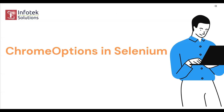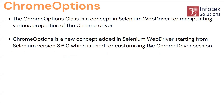Hey guys, welcome back. In this video we will see the Chrome Options in Selenium. Chrome Option is a class that's used to perform certain activities that are basically not performed by the drivers. First we'll see what exactly the Chrome Option is and what are the methods that have to perform the Chrome actions. The Chrome Options class is a concept in Selenium WebDriver.